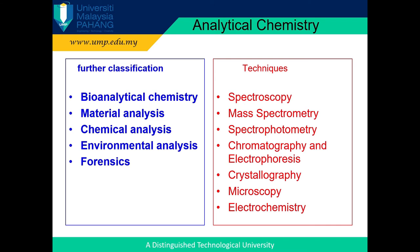Analytical chemistry can be further classified into bio-analytical chemistry, where you analyze biological samples such as drugs in urine; material analysis; chemical analysis; environmental analysis; and forensics. Common techniques or instruments used for those analyses are spectroscopy, mass spectrometry, spectrophotometry, chromatography, electrophoresis, crystallography, microscopy, and electrochemistry.